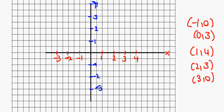Now let's graph this out. Minus 1, 0 being the first one — goes here. 0, 3 being the next one — goes here. 1, 4 — located here. 2, 3: 2 across, 3 up. And 3, 0.